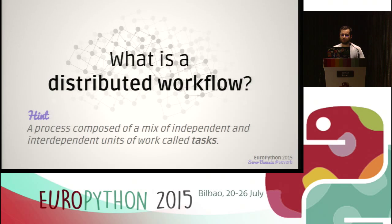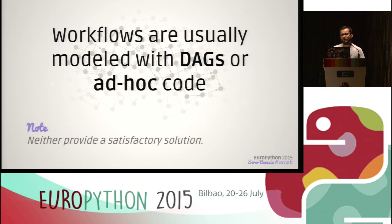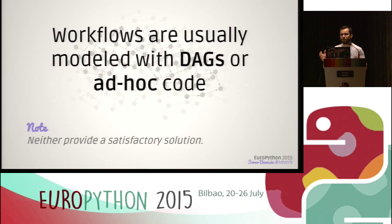The term workflow is used in many different contexts, but for our purpose a distributed workflow is some kind of complex process which is composed of a mix of independent and interdependent units of work that are called tasks. Usually workflows are modeled with DAGs, which stands for Directed Acyclic Graphs — think dependency graphs between the tasks — and they are modeled using some domain specific language, or with ad hoc code like a job queue where you schedule the next steps of the workflow.